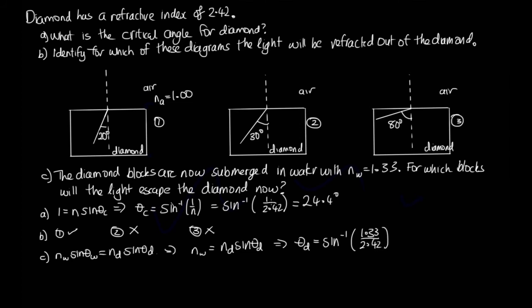So you can see, it's very similar to this one, except that we have 1.33 here instead of 1. And so when we solve that on the calculator, we end up with 33.3 degrees. Okay, so now it can come out for 1 because 20 is less than 33.3. It can come out for 2 because 30 is less than 33. But it still will be trapped within the diamond for case 3. Okay, so that's how we solve that problem.